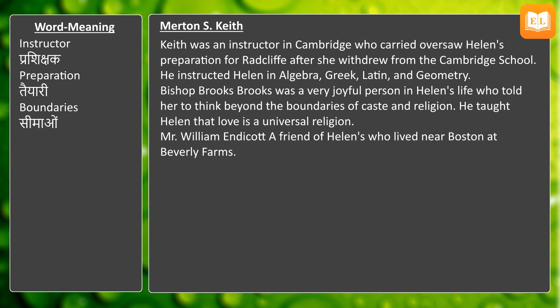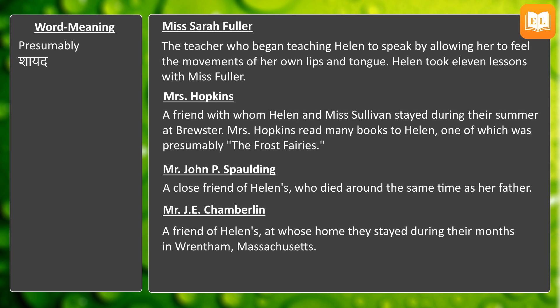Bishop Brooks was a very joyful person in Helen's life who told her to think beyond the boundaries of caste and religion and taught her that love is a universal religion. Mr. William Endicott was a friend of Helen's who lived near Boston at Beverly Farms. Miss Sarah Fuller was the teacher who began teaching Helen to speak by allowing her to feel the movements of her own lips and tongue. Helen took eleven lessons with Miss Fuller. Mrs. Hopkins was a friend with whom Helen and Miss Sullivan stayed during their summer at Brewster, and she read many books to Helen, one of which was presumably 'The Frost Fairies.'